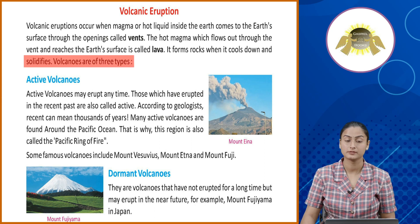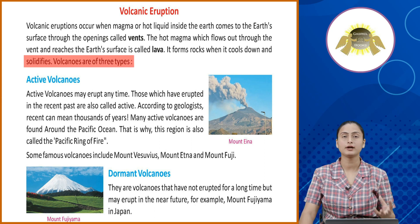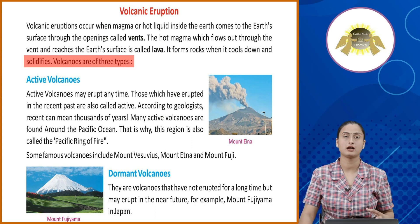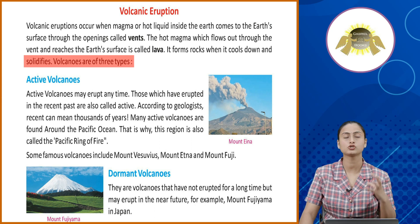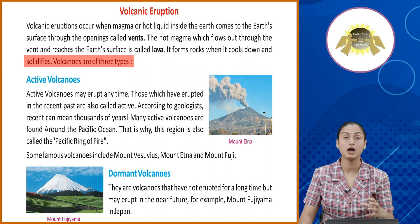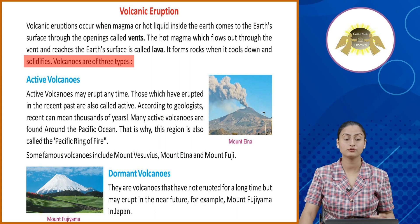Volcanoes are of three types. Volcano jo hota hai, ye hot magma jab bahar nikalta hai, use lava kaha jata hai. Jaisi ye solidify ho jata hai, ye ek hard rock ki tarah hota hai. Volcanoes bhi three types ki hote hai.